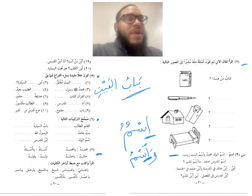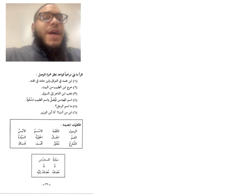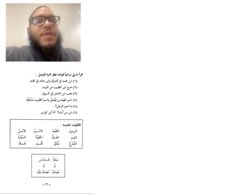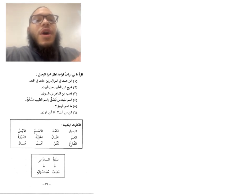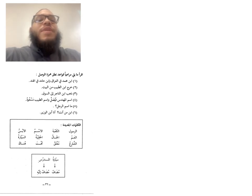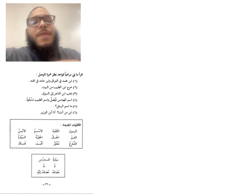Practice with the following sentences under Exercise 9. The last exercise says: read what follows, paying attention to and observing the rules of pronouncing Hamzat al-Wasl. That Hamza, which looks like an Aleph, is called Hamzat al-Wasl — we pronounce it at the beginning of a sentence, but if it comes after a letter, we do not pronounce it. Let me read number one for you to demonstrate, and then I want you to follow that example and read the following sentences.